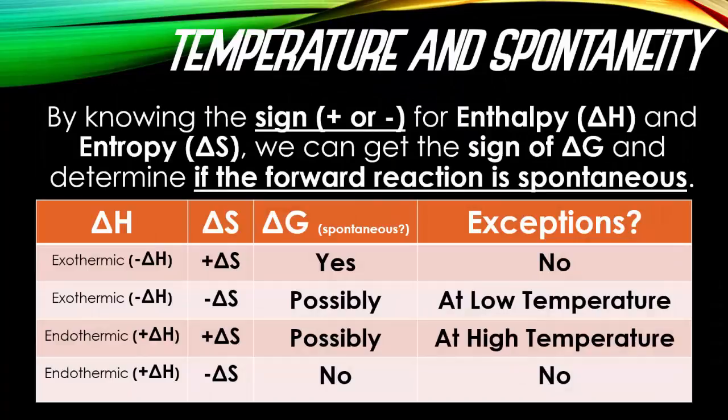Knowing the sign of enthalpy — negative or positive — is easy; you can determine that right off of reference table I. For entropy, a gaining or losing of randomness, you just have to look at the chemical reaction and see if you're making more products or fewer. From those signs, we can determine the sign of delta G to decide if the forward reaction is spontaneous.